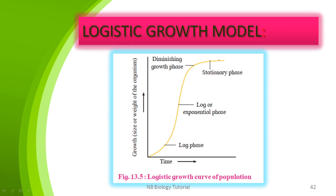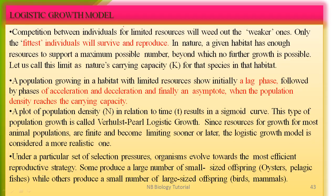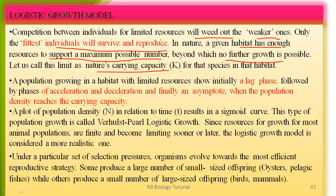The graph indicating the logistic growth model shows a sigmoid curve. The first phase is the lag phase, followed by the exponential growth phase, and the last phase is the stationary phase — giving the characteristic S-shaped sigmoid curve. Under the logistic model, competition between individuals for limited resources weeds out the weaker ones; only the fittest individuals survive and reproduce. In a given habitat, resources can support a maximum possible number of individuals beyond which no further growth is possible — this limit is called the carrying capacity, indicated as K.